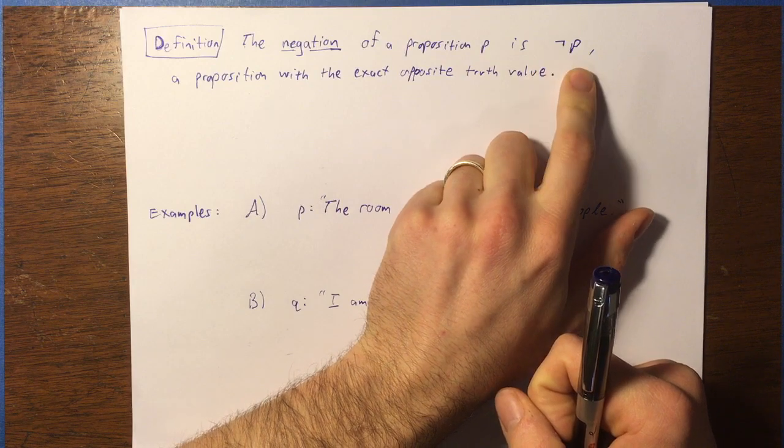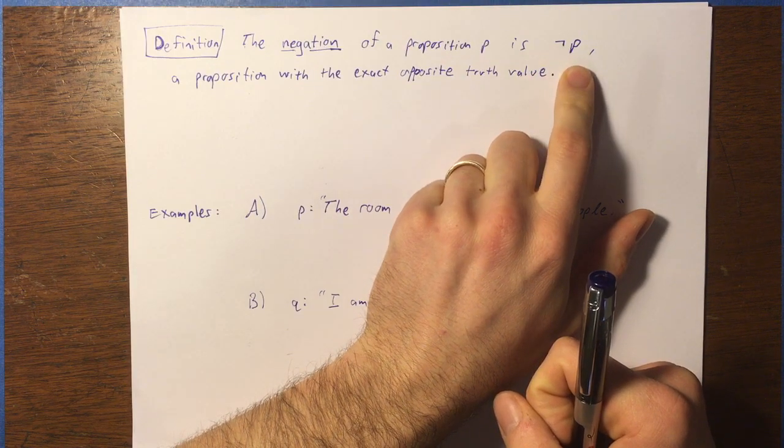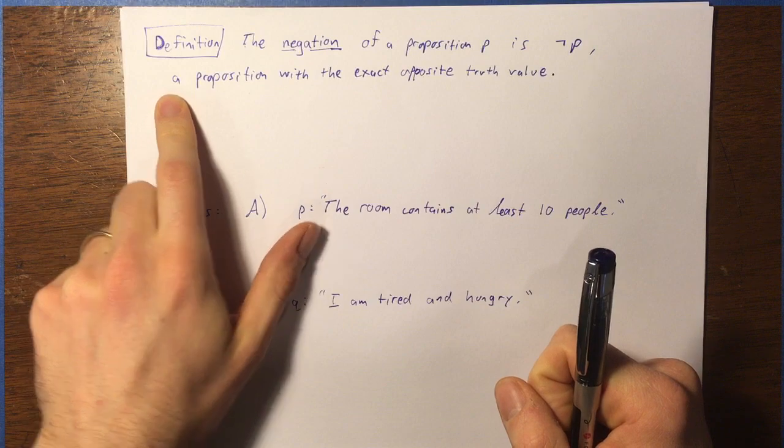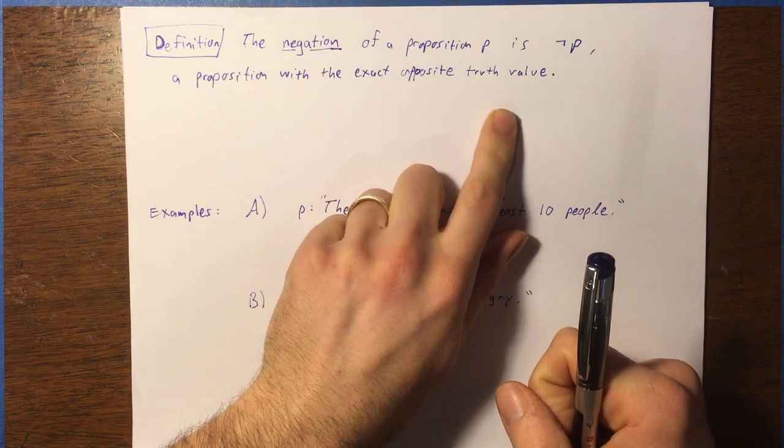So we'll define the negation of a proposition P as notated like this, which can be said not P or the negation of P. And that is a proposition with the exact opposite truth value.